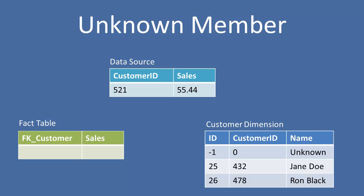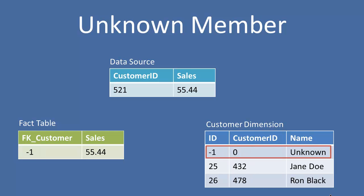Record 521 is our customer ID. We don't have 521 yet in our dimension, so we're simply going to place a negative 1 as the value for our foreign key customer in our fact table. We can also take that customer dimension and create an unknown member record in there as well, just to provide some context to the business whenever this lookup occurs at query time.